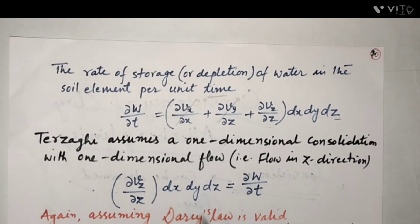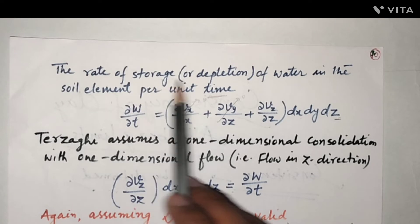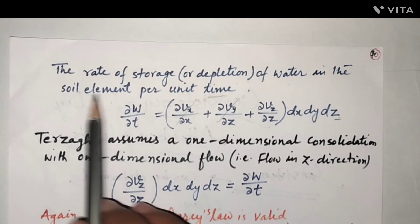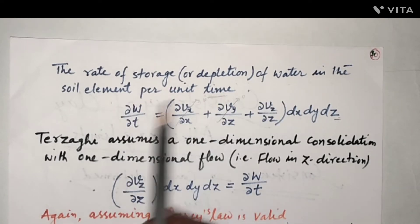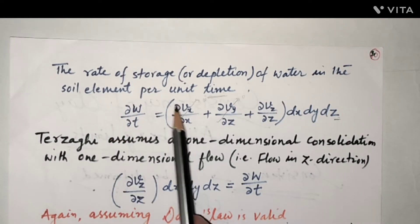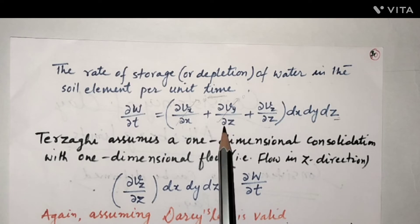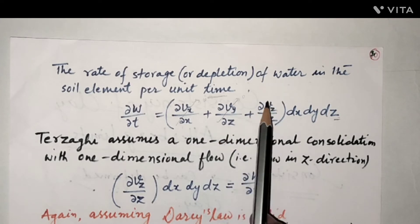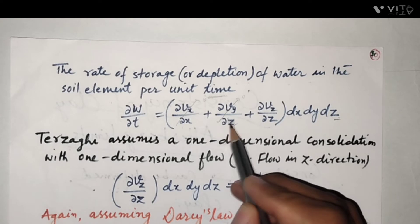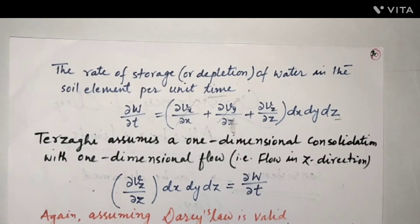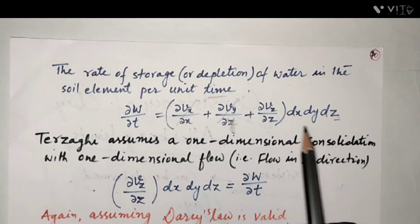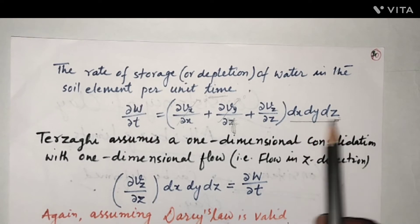The rate of storage or depletion of water in the soil element per unit time, dW/dt, is equal to (∂Vx/∂x + ∂Vy/∂y + ∂Vz/∂z) · dx·dy·dz.